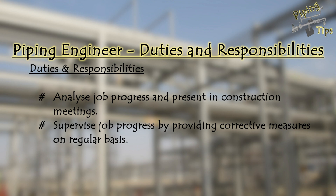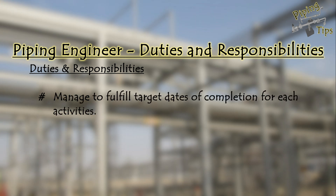If the progress is not going as per our planning, we have to make corrective actions to bring it back to the planned result so that there will not be any delays at the end. It is very essential to fulfill our target dates. Each activity may be targeted — especially for tie-in jobs or shutdown jobs, there will be a fixed date of commissioning or handover. So we have to finish all our jobs before that date. In the case of production sites, there will be delivery and dispatch dates for products, and we have to fulfill these delivery dates at any cost.